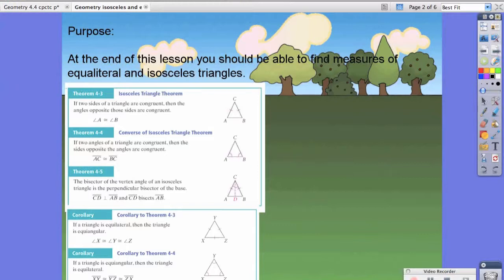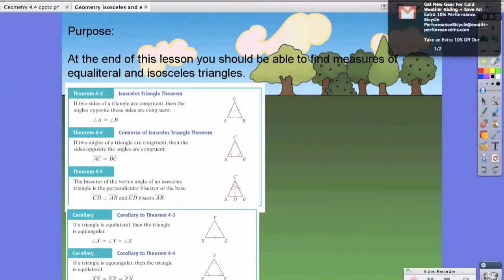So let's look at a few theorems and corollaries. Theorem 4.3 is the isosceles triangle theorem. It says that if two sides are congruent, then the opposite angles of those sides are also congruent. So if you take a look at this picture here,